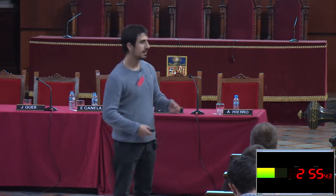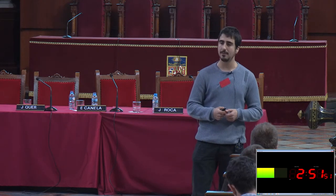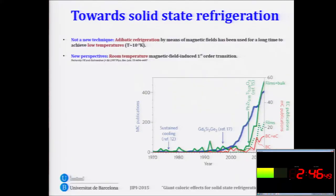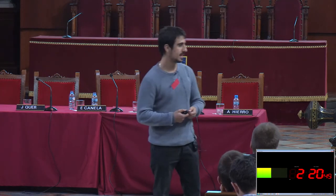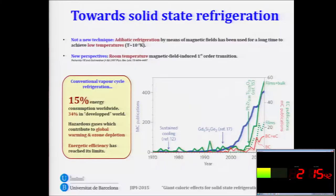One of the most important applications of giant caloric effects in solid-state materials is solid-state refrigeration. Research in this field grew exponentially since the late 90s, when a material exhibiting a first-order magnetostructural transition at room temperature was found. New possibilities and applications arose regarding solid-state refrigeration, which is highly desirable because energy consumption represents a large fraction of our daily energy use. Conventional vapor cycle refrigeration employs hazardous gases which damage our atmosphere, and this technology has reached its energetic limits.